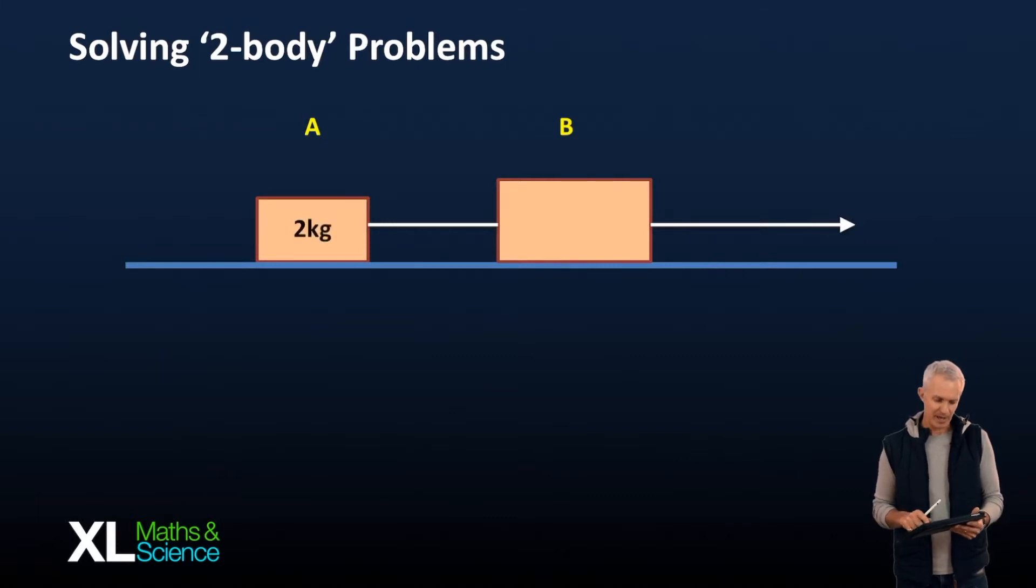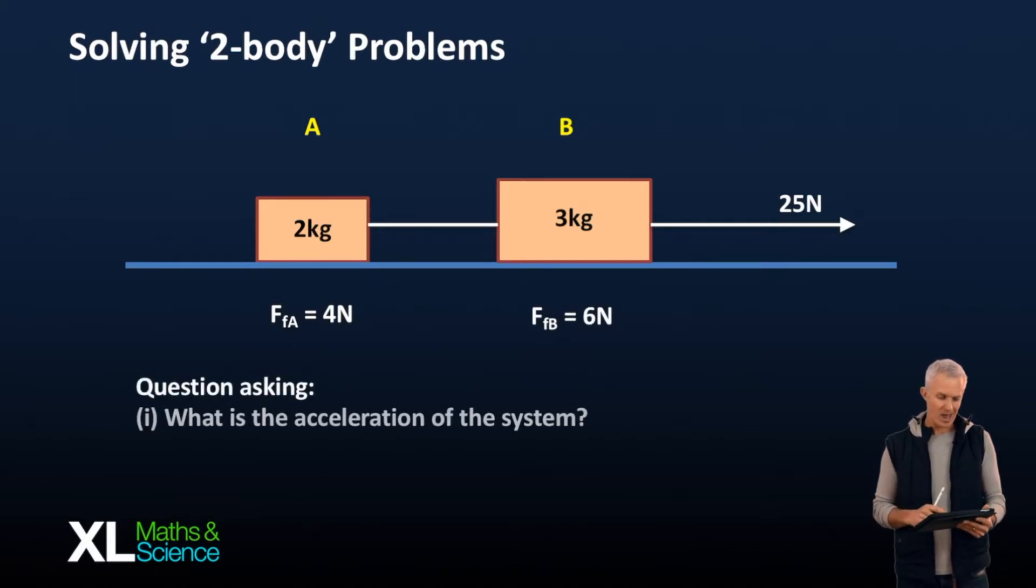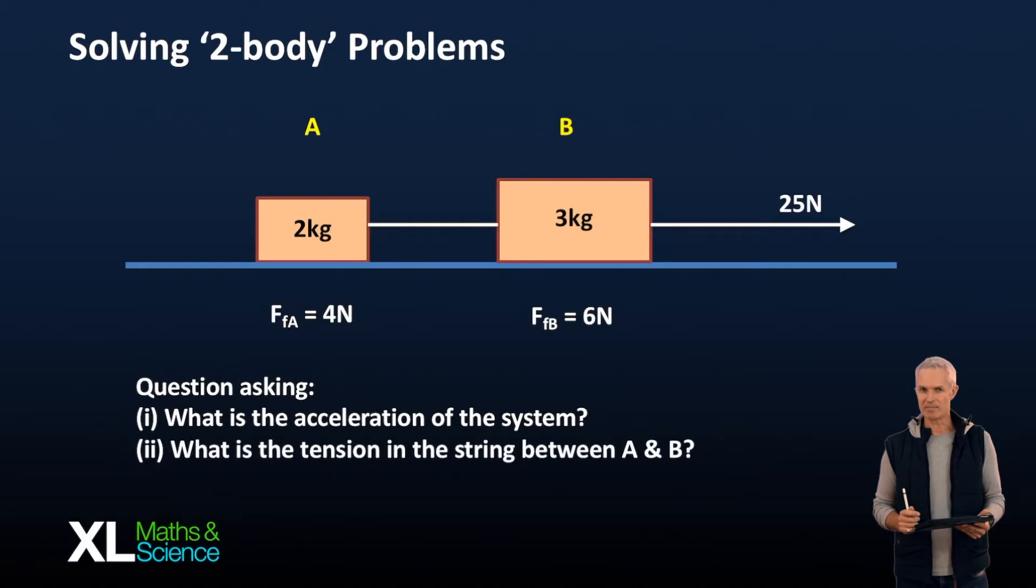Let's put some figures here. A is 2kgs, B is 3kgs, Tommy pulls with 25 newtons and there's a bit of friction, 4 and 6 respectively on A and B. Now the question would go on to ask perhaps something like, well what's the acceleration of the system? Or what is the tension in the string between A and B? So how do we tackle a question like this? Think of it as a four step solution.